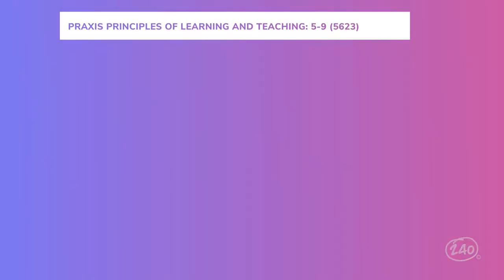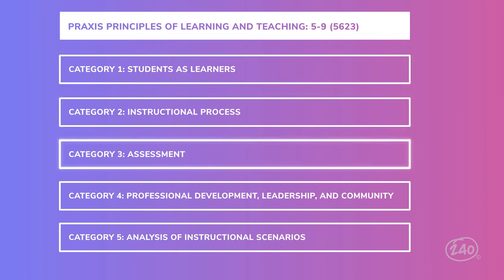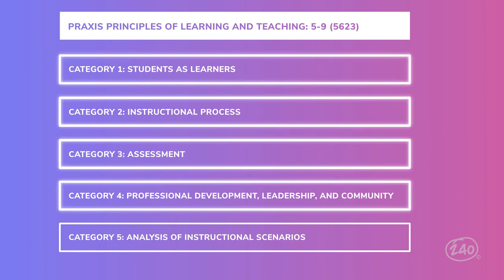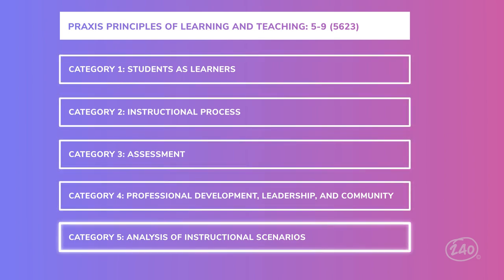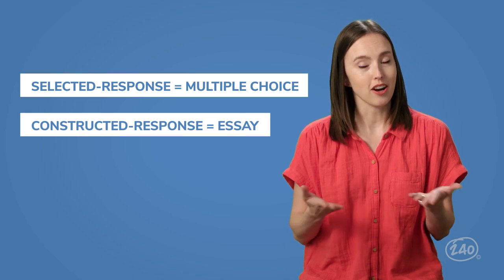This Praxis Principles of Learning and Teaching exam consists of five content categories: Students as Learners, Instructional Process, Assessment, Professional Development Leadership and Community, and Analysis of Instructional Scenarios. The questions for categories 1 through 4 are all Selected Response, and Category 5 asks Constructed Response Questions, or CRQs for short. Selected Response are multiple-choice, and Constructed Response are like essays.